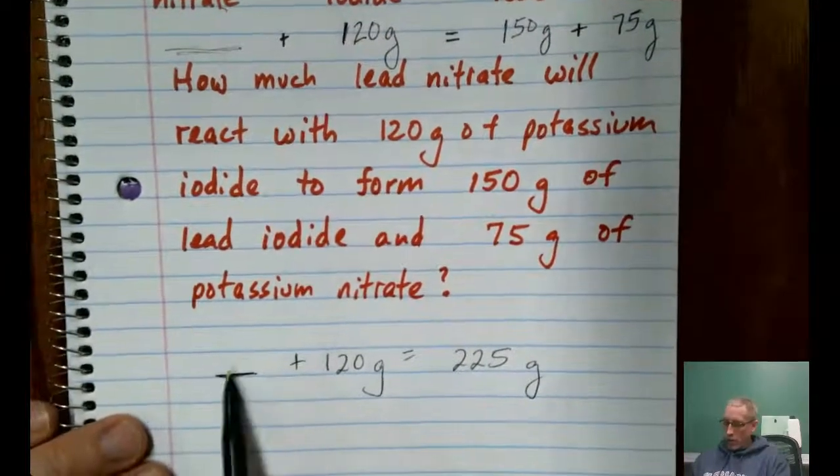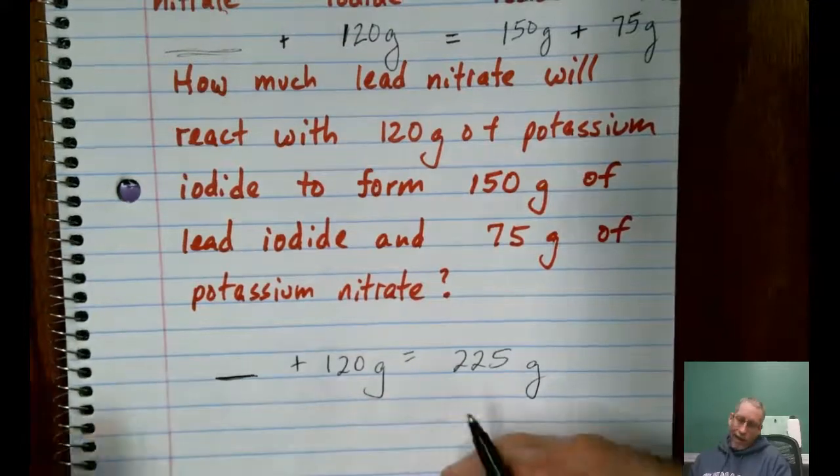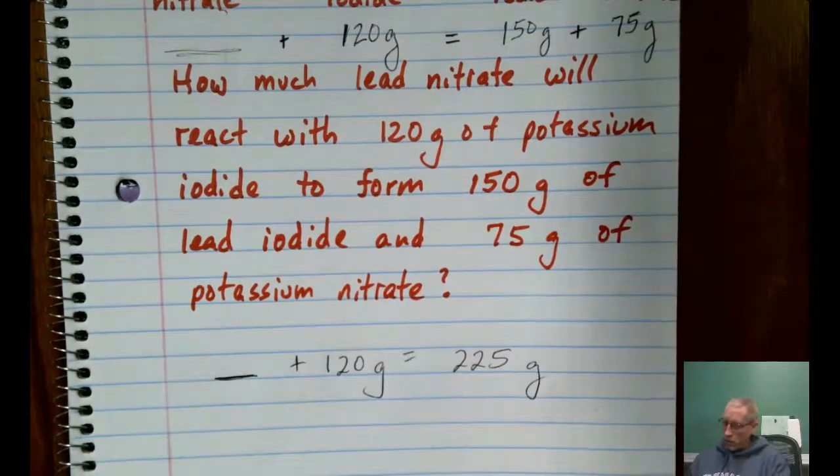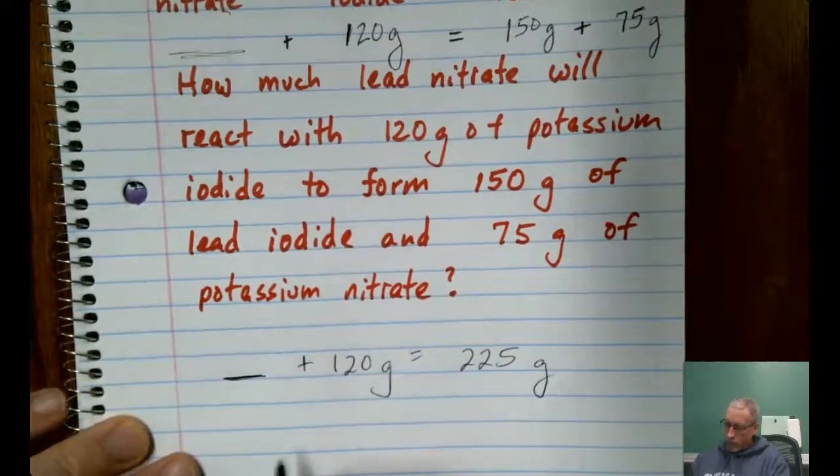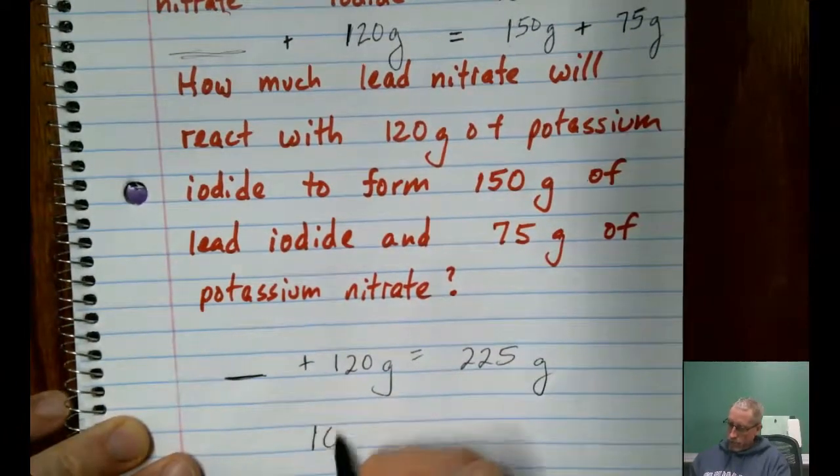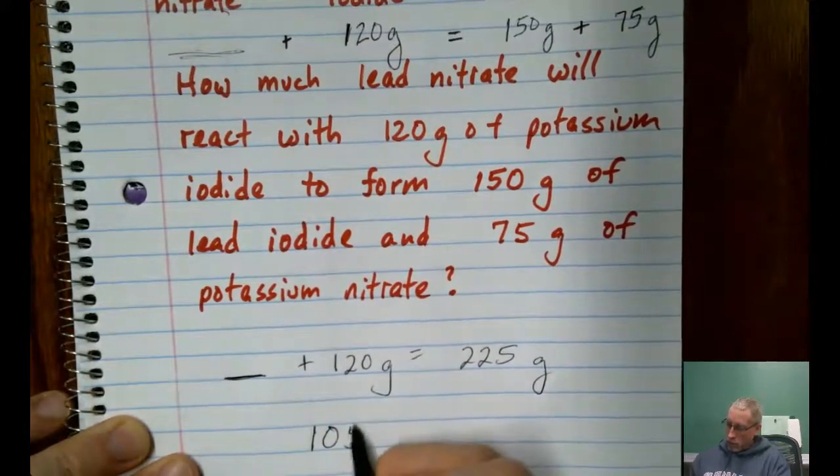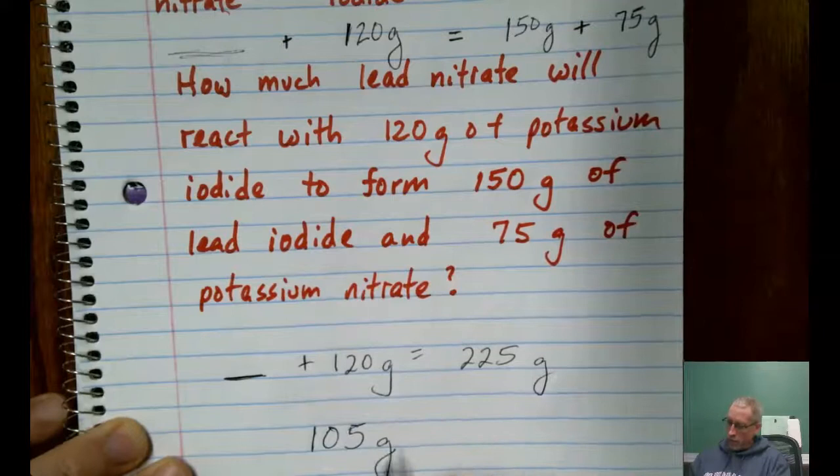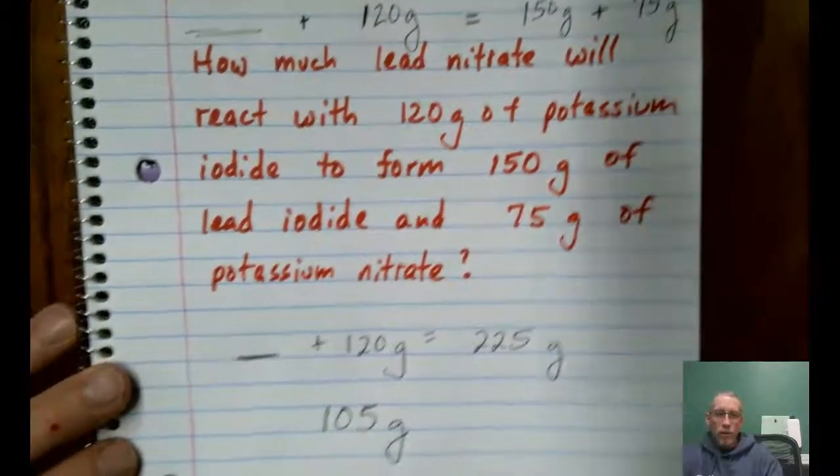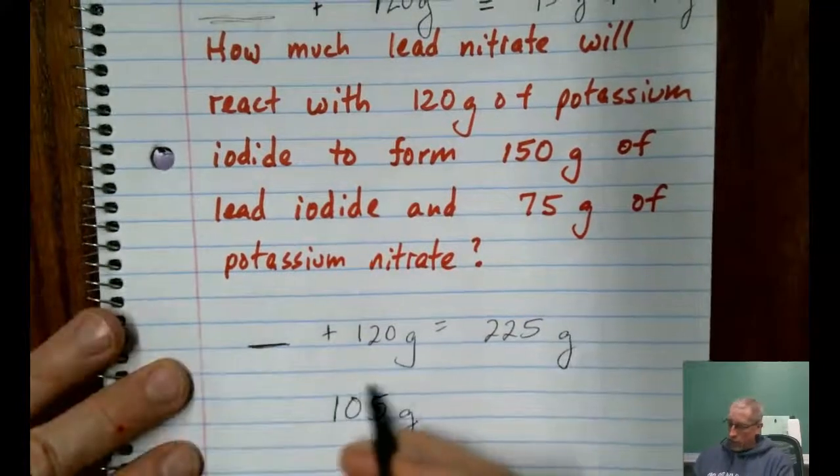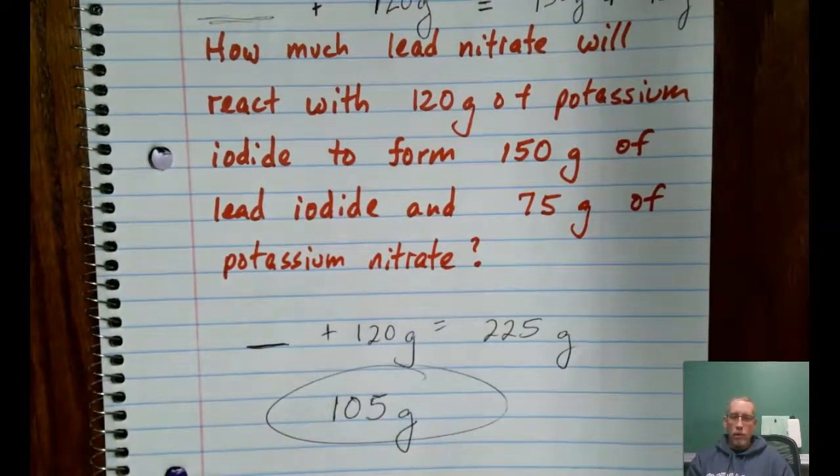So, it looks a little simpler here. How many grams plus 120 makes 225? That actually is one I can do in my head, but you can certainly grab a calculator or fire up Desmos or whatever. It's 225 minus 120, which is 105 grams. Trying to keep the numbers a little bit more manageable for you there. So, 105 grams of the lead nitrate is what we would need to react.